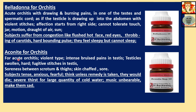Aconite for acute Orchitis: Both Aconite and Belladonna are mainly acute, violent-type remedies. Intense bruised pain in testis. Testicles swollen and hard. Fugitive stitches in testis. Soreness between scrotum and thighs. Skin chapped and sore. Subjects are tense, anxious, fearful — thinking that unless a remedy is taken, they would die. Severe thirst for large quantities of cold water. Music is unbearable and makes them sad.